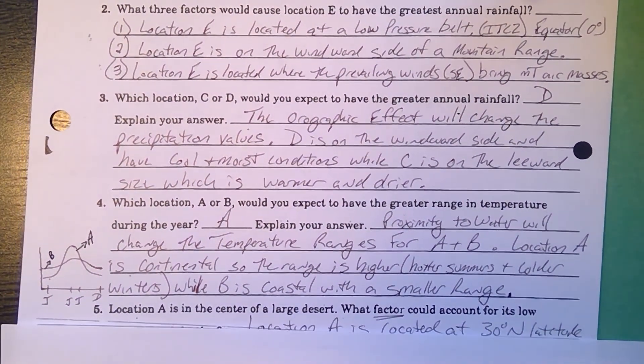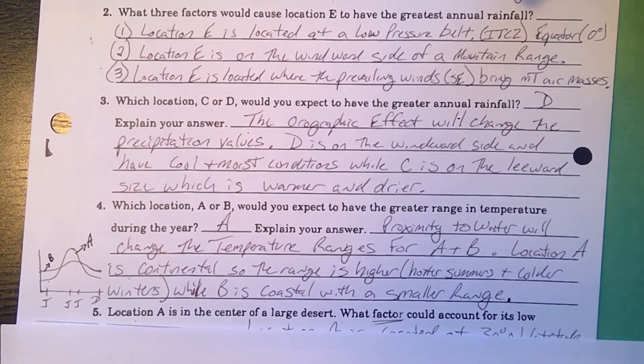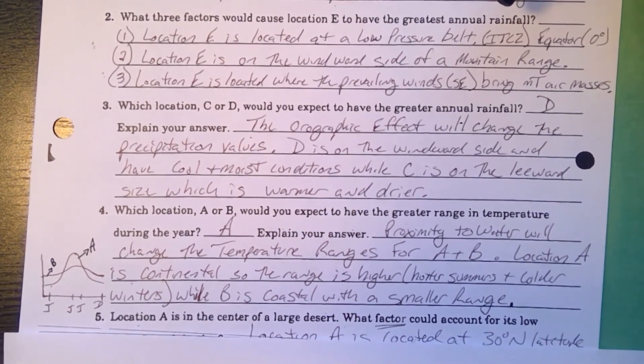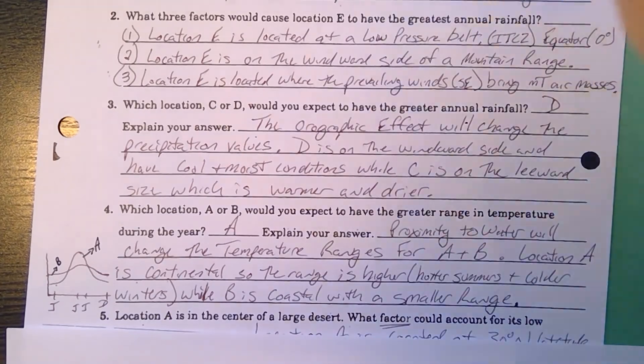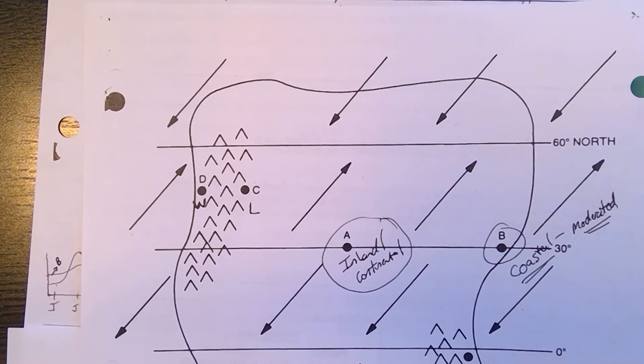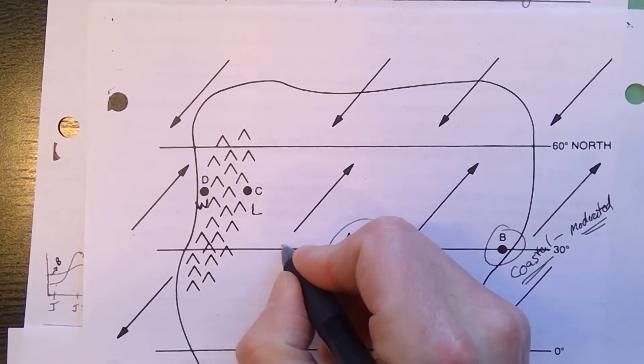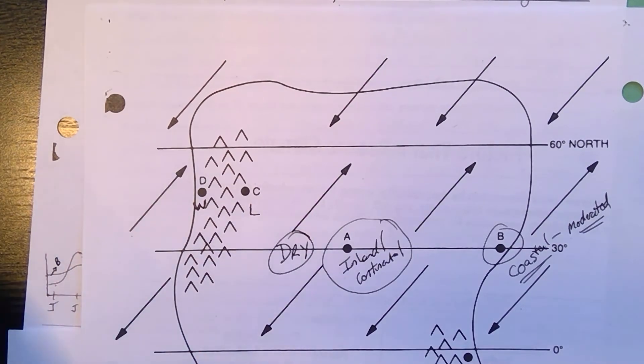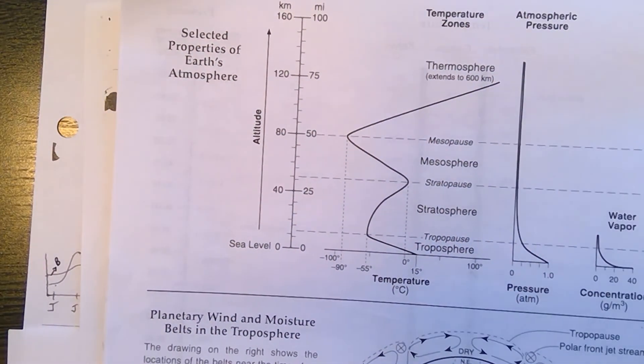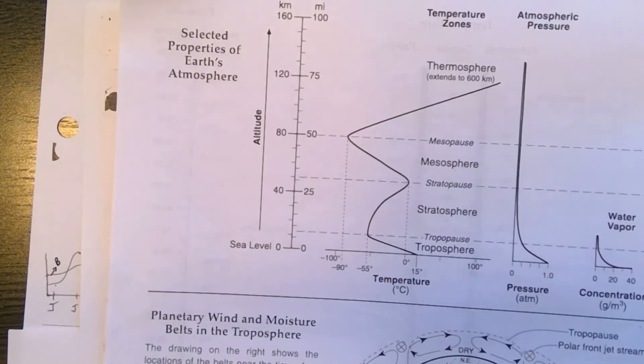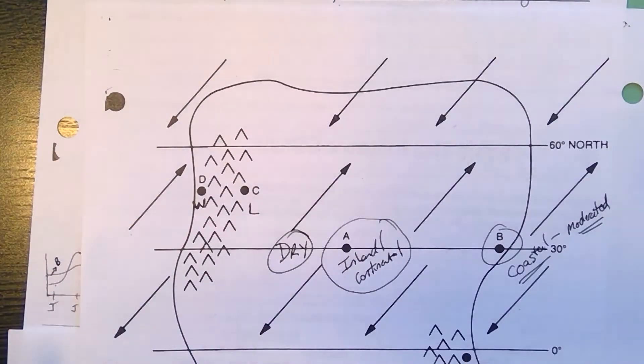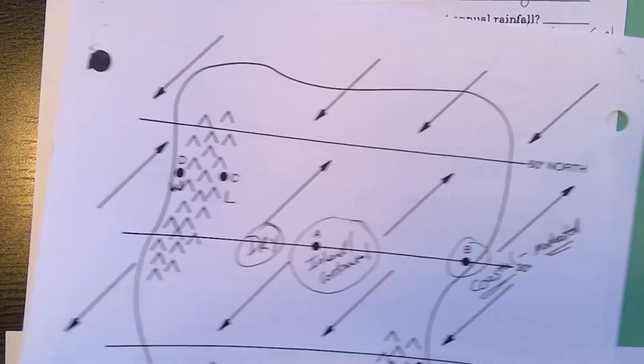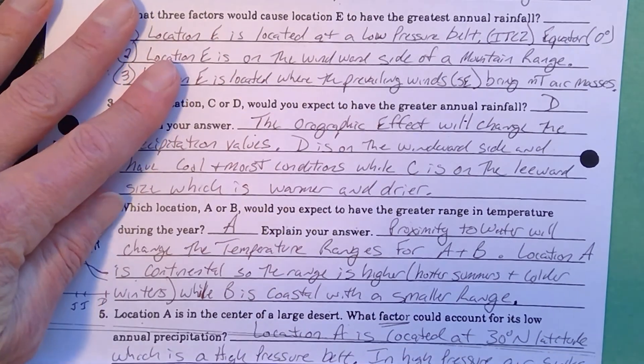Number five: A is located near the center of a large desert. What factor would account for its low annual precipitation? Well, we said you always look at the reference tables. Right at 30 degrees north, it says dry. On the reference tables, when you look at 30 degrees north, not only does it say dry, you see that the air is descending and sinking air compresses and warms. So you get deserts mostly at 30 north and 30 south.